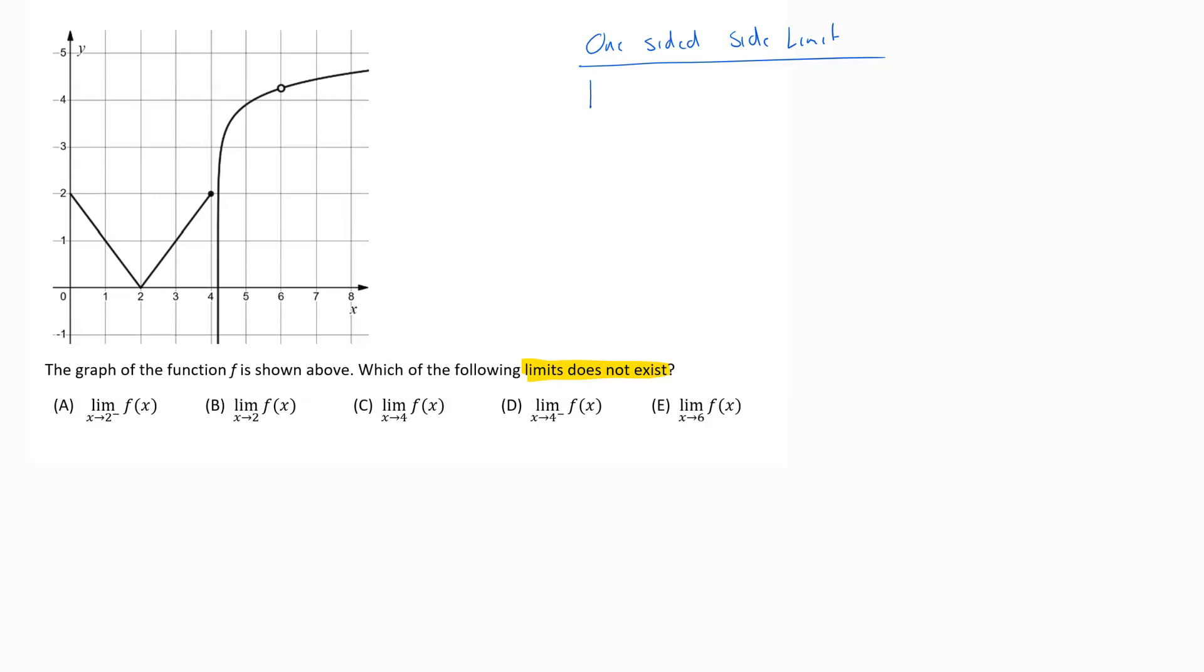One-sided limits are your left-hand limit, I just call it LHL, that would be something like limit as x approaches some number and then they put the negative sign up in the exponent there, or a right-hand limit, so limit as x approaches a from the right of f of x.